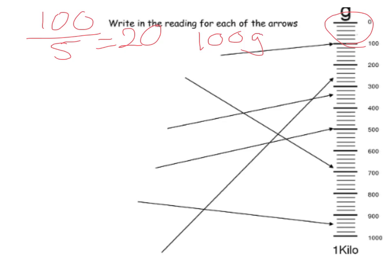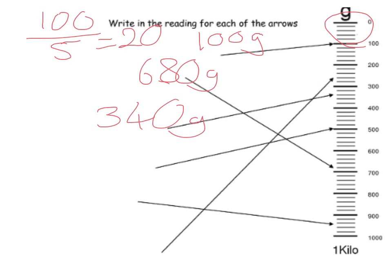My second one is pointing at this line. I start on 600 and I'm going up in 20s: 620, 640, 660 — so that's going to be 680 grams. My next one, starting at 300 and going up in 20s: 320, 340 — so 340 grams.